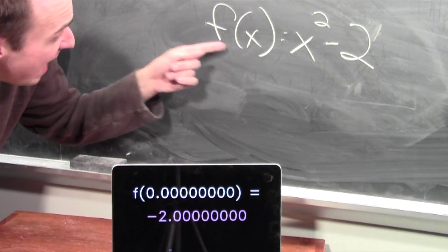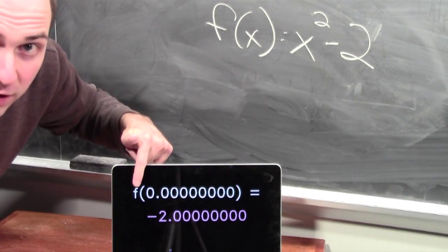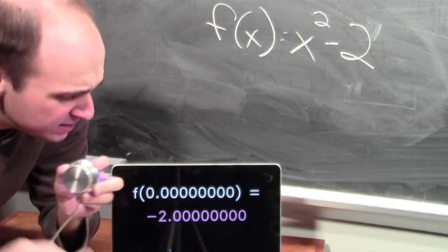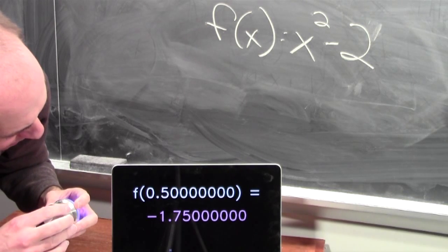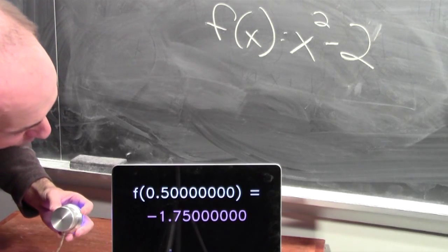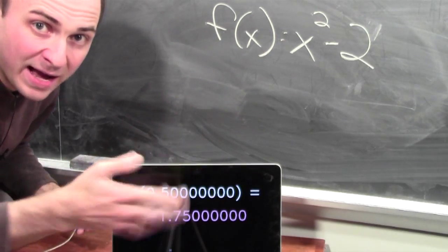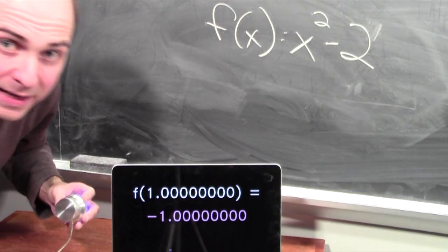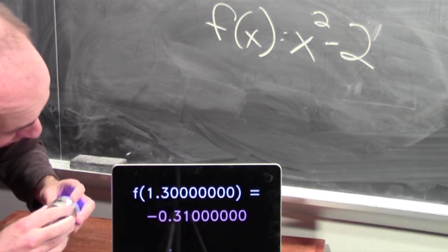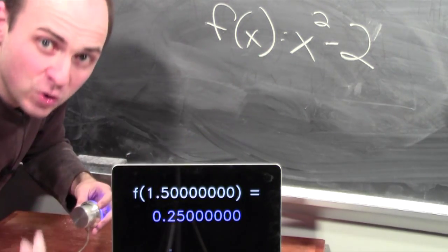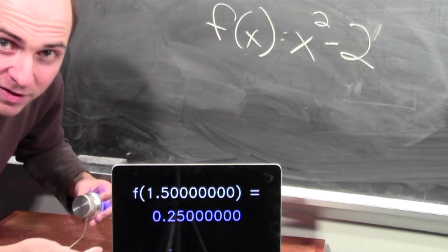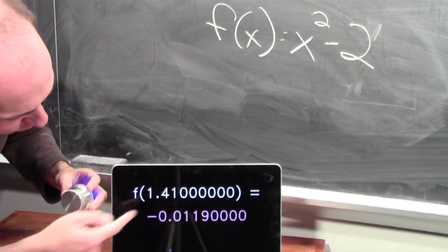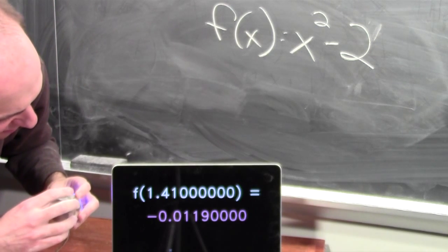Here I've got a physical function device — f of x equals x squared minus 2 — with a knob that changes the input value. At 0, I get out minus 2. At 0.5, the output is negative 1.75. At 1, f of 1 is minus 1. At 1.5, 1.5 squared is 2.25, minus 2 is 0.25 — that's positive. So I wheel it back down. At 1.41, the function's output is negative again.